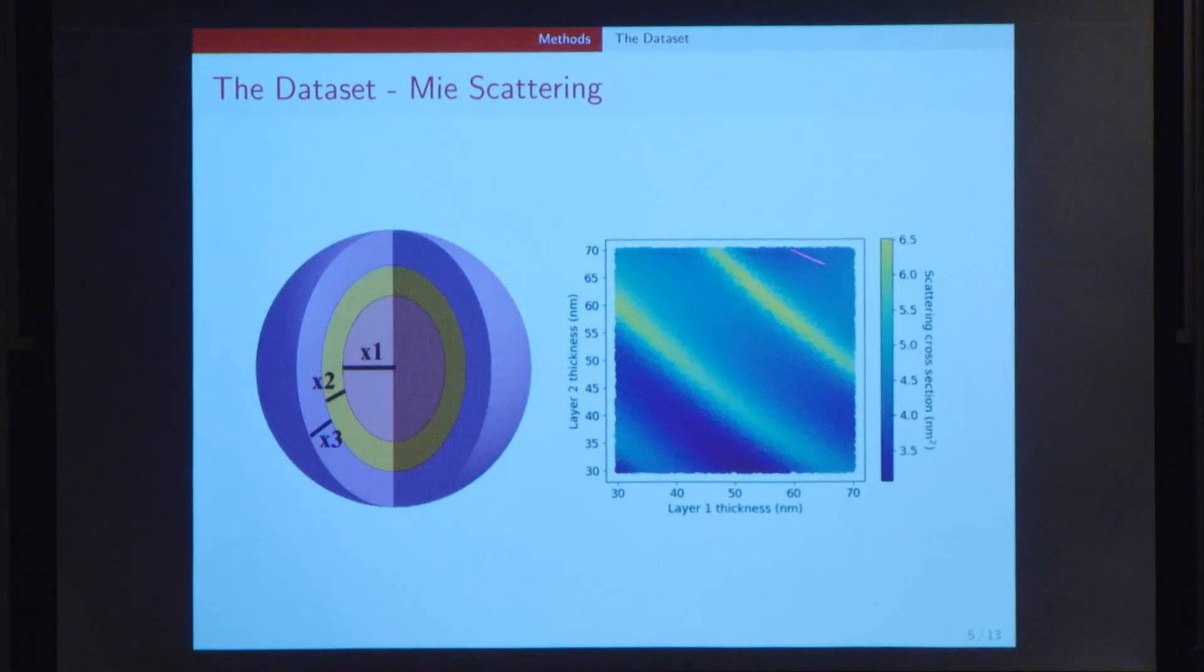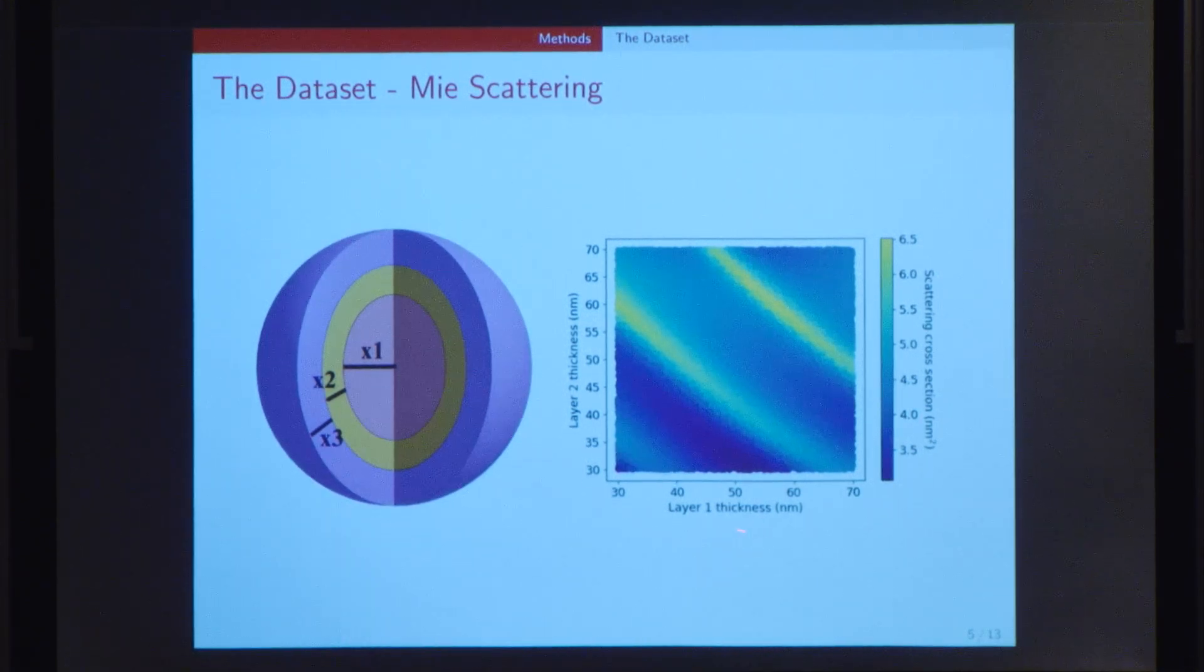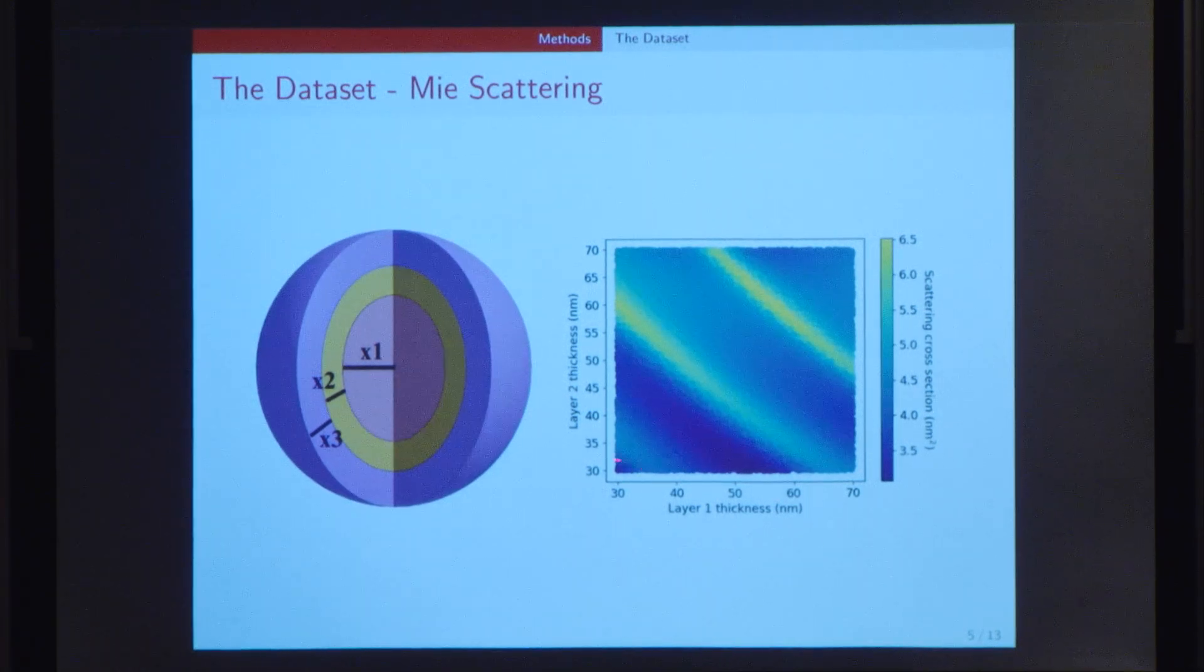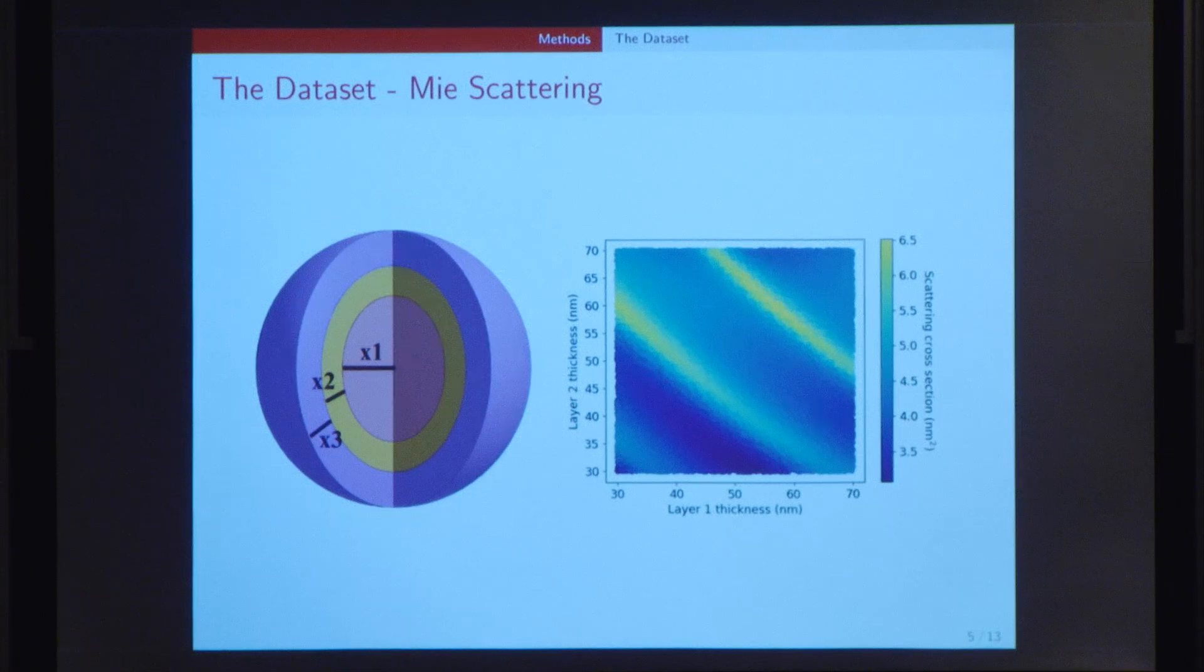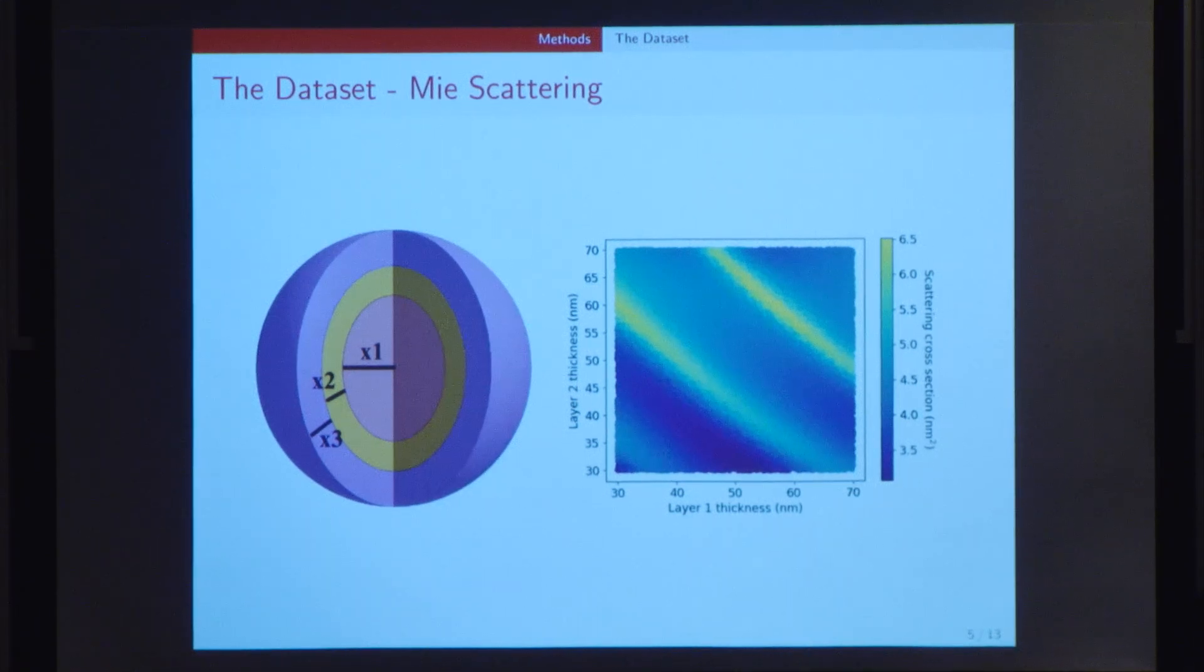Another example is shown here, which represents the dataset for the two-layered nanoparticle. The two axes are, respectively, the thicknesses of the two layers, and the color represents the scattering cross-section in nanometers squared. The main reason we use Mie scattering as our dataset is because it's a fairly complex phenomenon, but we understand the math behind it very well. So we can easily generate a test database to test our algorithms on.